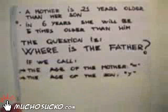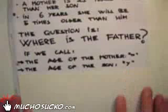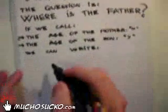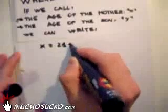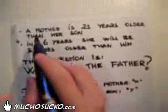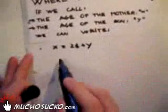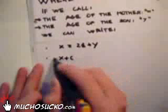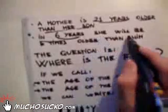If we call the age of the mother X and the age of the son Y, we can write: X equals 21 plus Y, because the mother is 21 years older than the son. And since in 6 years the ages will be increased by 6, we can write X plus 6 equals Y plus 6.